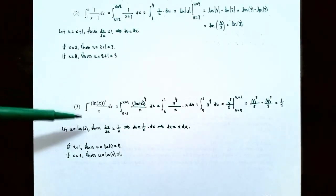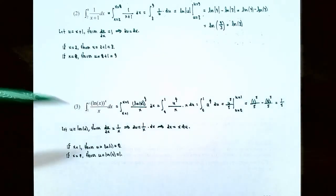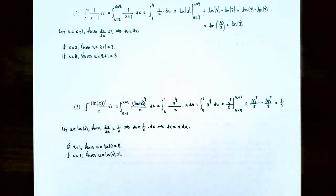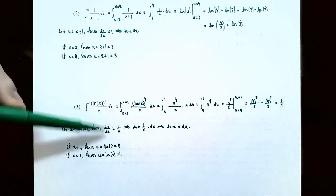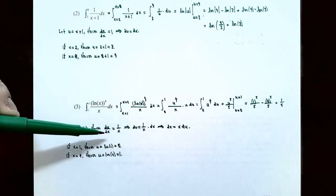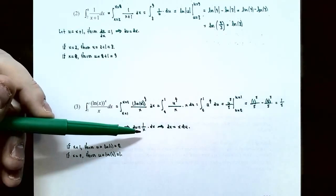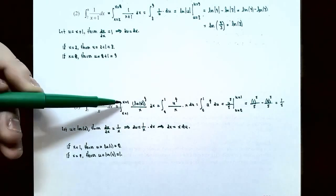Number three: find the value of the definite integral from x equals 1 to x equals e of (natural log of x) to the fourth power, all divided by x, dx. The integrand is a composite function — natural log raised to the fourth power — so we use the substitution method. Let u be the inside function: u equals natural log of x. Taking the derivative, du/dx equals 1/x. Multiplying both sides by dx gives du equals (1/x) dx. Solving for dx gives dx equals x times du. We also need to change the limits of integration from x values to u values.